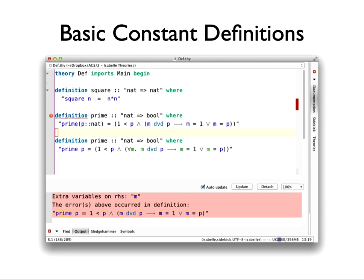Where there's an error there are various ways of looking at it: you can look at the output panel at the bottom, or if you hover the mouse over the red line in exactly the right place it gives a little pop-up with the same error message. The error here is one I think was first discovered by Mike Gordon long ago: we would like to define the function 'square' as square of n equals n times n — that's straightforward, fine.